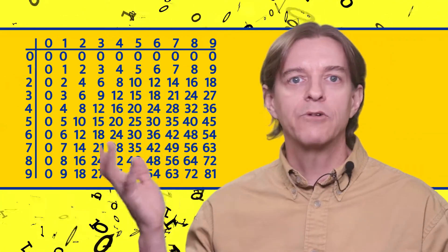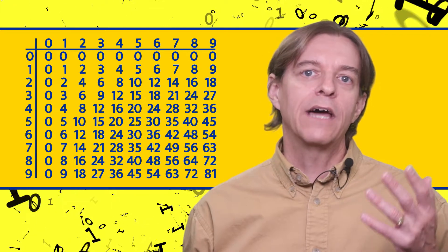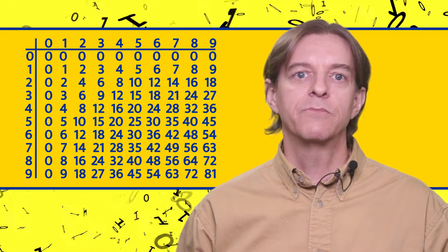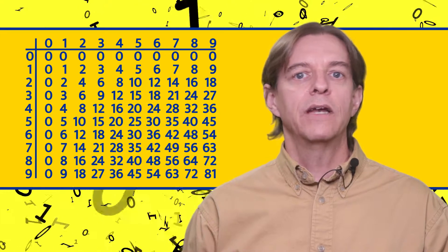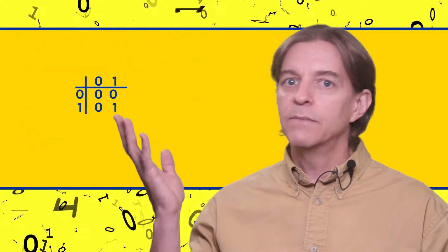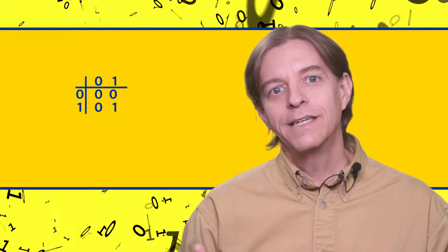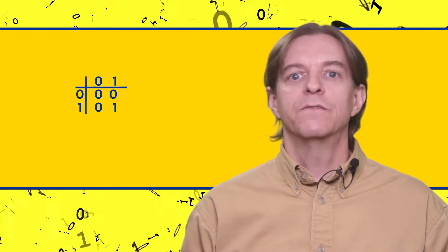Remember in grade school how we had to memorize this multiplication table to know how to multiply and divide decimal numbers? And remember how in the last episode we found out binary number multiplication was just these four elements of the multiplication table, and that made multiplication really easy? Well, the same thing holds true for division.